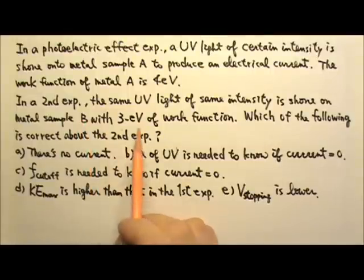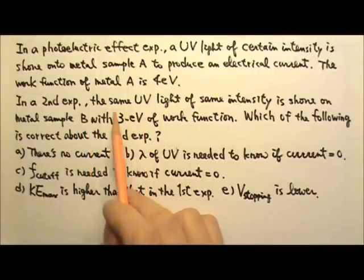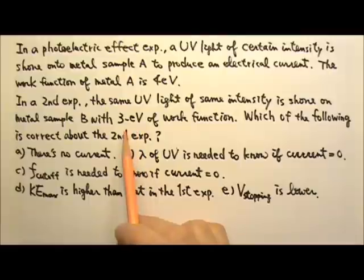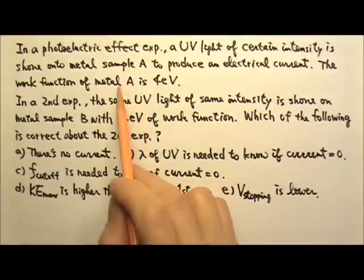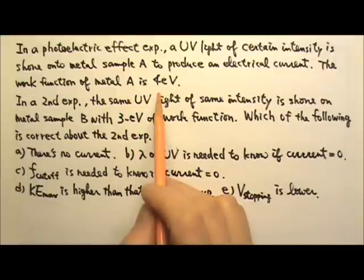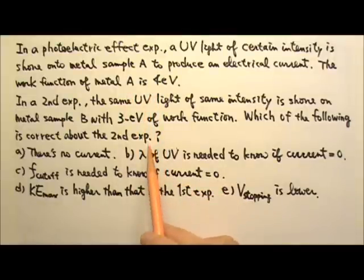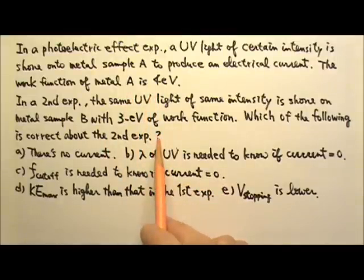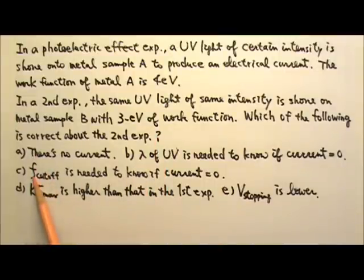Because sample B has a lower work function, it takes less energy to eject an electron. There is a current produced in the first experiment, so there must also be a current in the second experiment. Therefore, A, B, and C are all wrong.